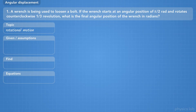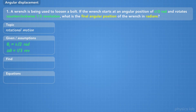So what information are we given? We're dealing with rotational motion, and the starting position of the wrench — the initial angular position — is pi over 2 radians. The wrench rotates 1 third of a revolution, which would be a positive angular displacement since it rotates counterclockwise. The problem is asking us to find the final angular position, specifically in radians.